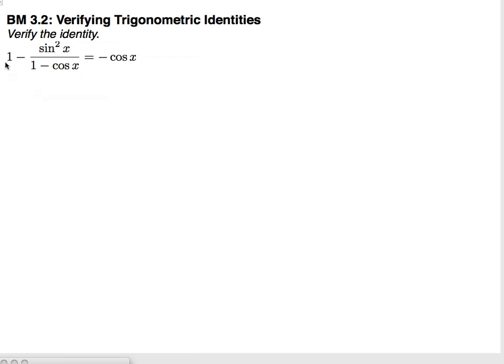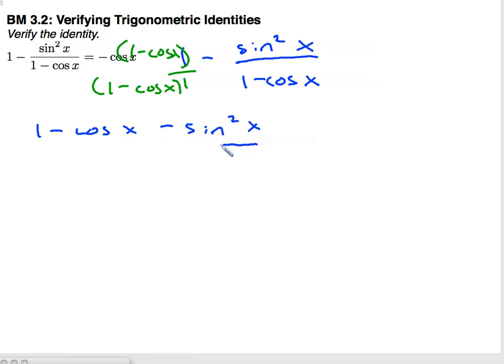Here I'm actually going to get a common denominator. So this 1 minus sine squared x over 1 minus cosine x, I'm going to multiply top and bottom by 1 minus cosine x. And so I have 1 minus cosine x minus sine squared x over 1 minus cosine x.